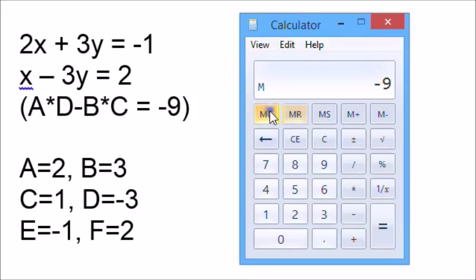Now, let's go for x. Clear the memory, and calculate negative 3 times negative 1 equals memory plus, then 3 times 2 equals memory minus memory recall. Now, we're going to divide by that result. So, divide by negative 9 equals, and x is going to be 1 third or .333.